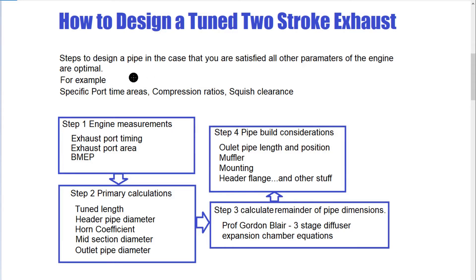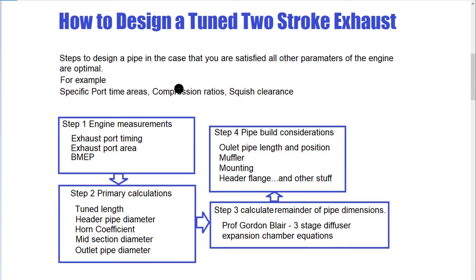What I'm going to show you here is how to design a pipe for the engine you've got. But you have to be satisfied that everything else is in order — port balances, the sizes, the timings of each of the ports, compression ratios, squish clearance, and not limited to that. If that's not correct, we will do that a little bit later, because after we've done the expansion chamber we're going to move to things like port time areas and other factors that you might want to do first.